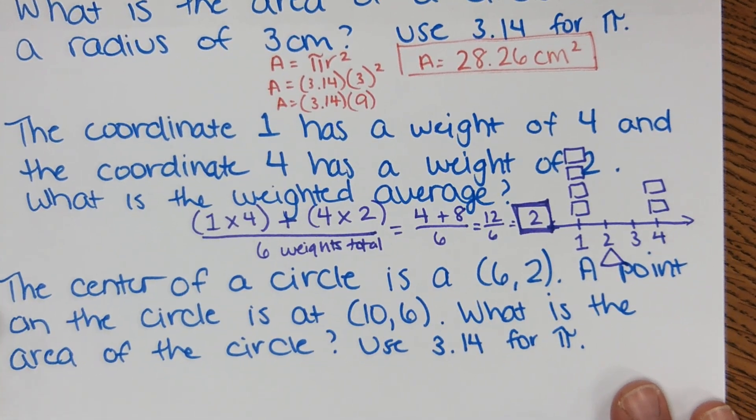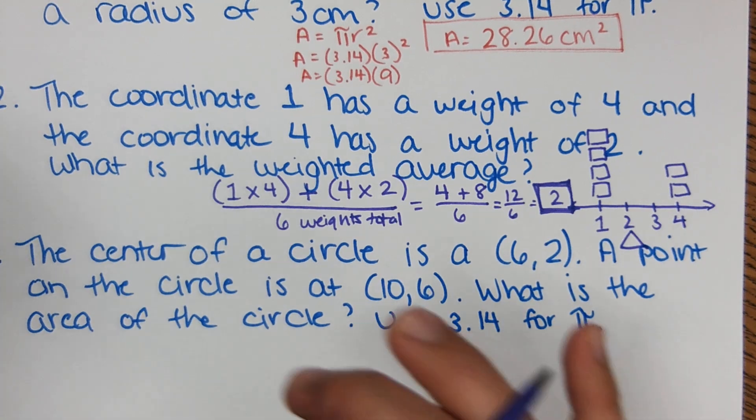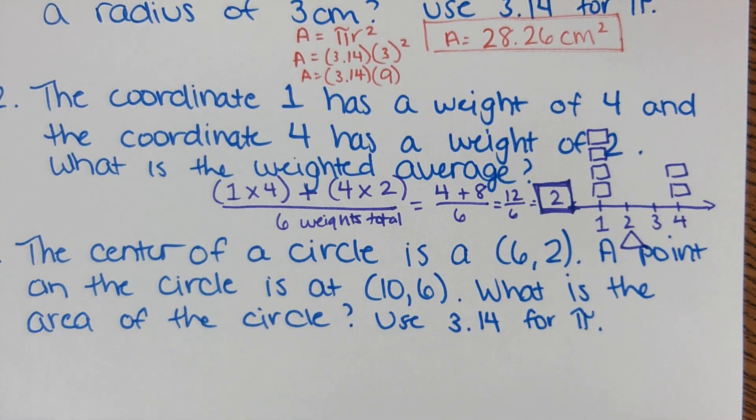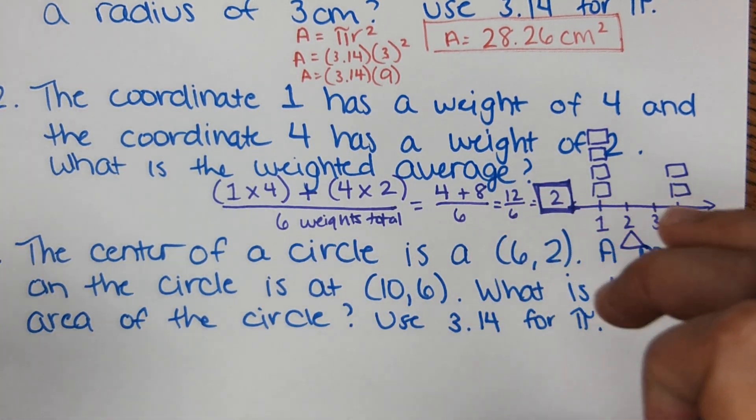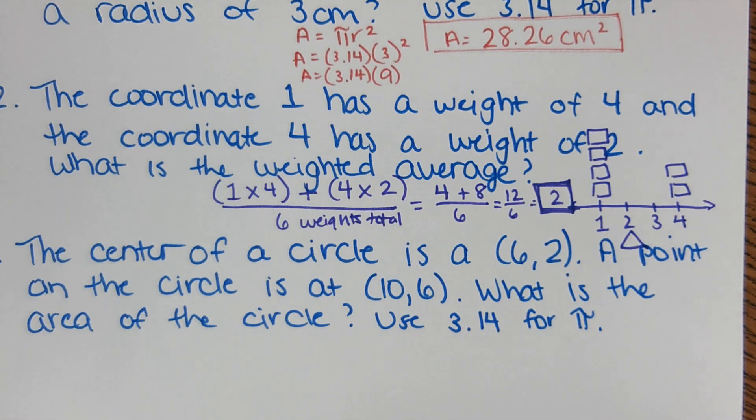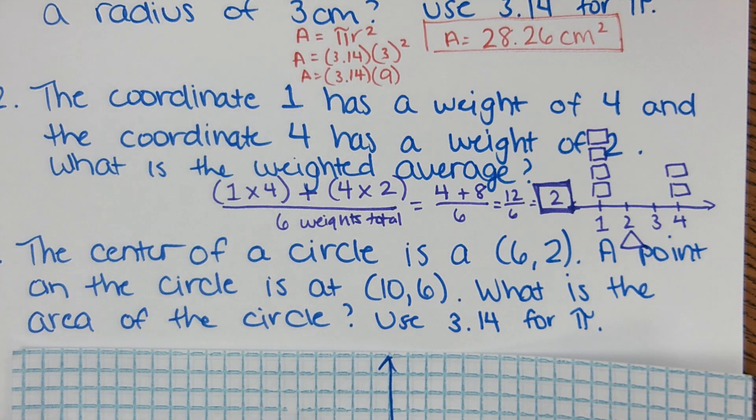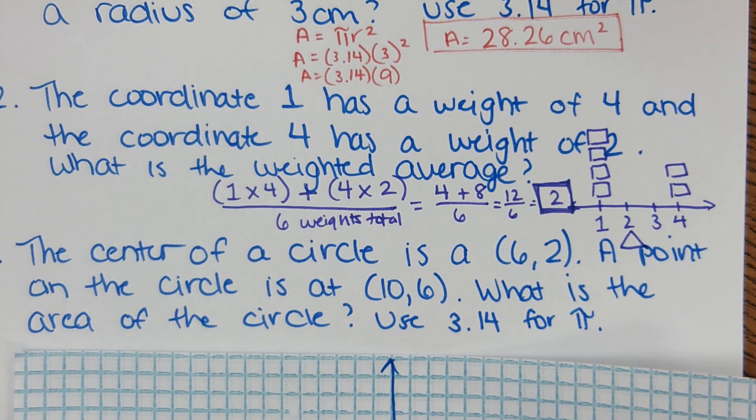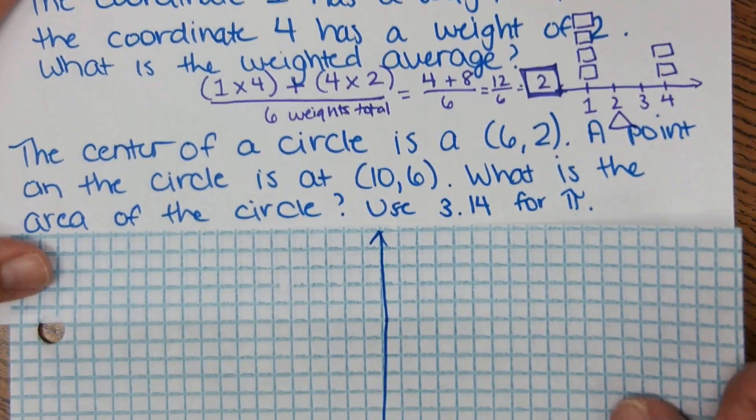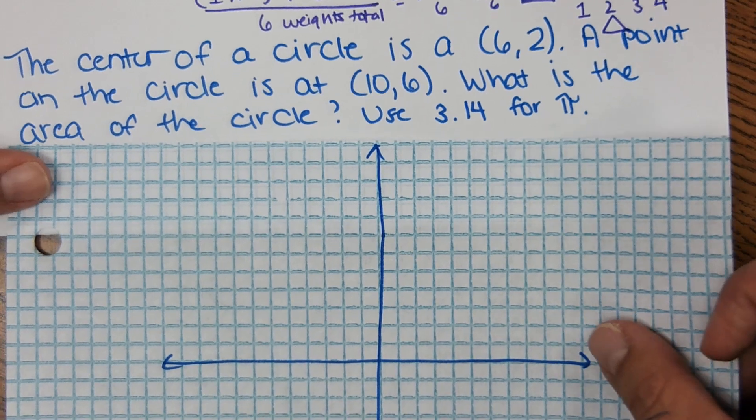Okay, the next one is a bit of a challenge, it's definitely a level like three or four on the EOC. It does come up quite often, so I wanted to introduce it. It says the center of a circle is at (6,2), a point on the circle is at (10,6), what is the area of the circle? So it's requiring you to do a couple different skills that we've learned.